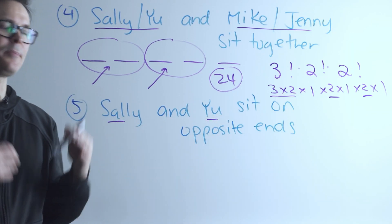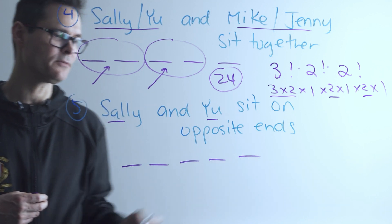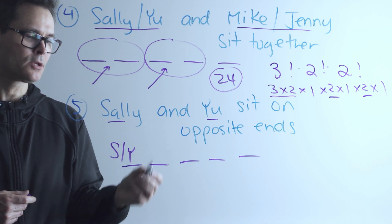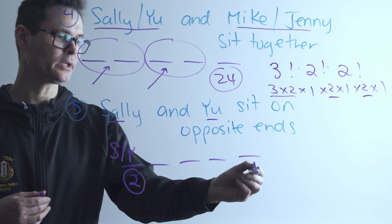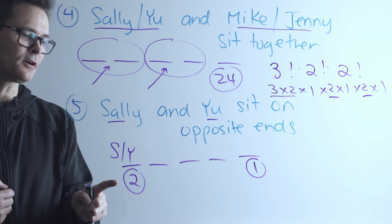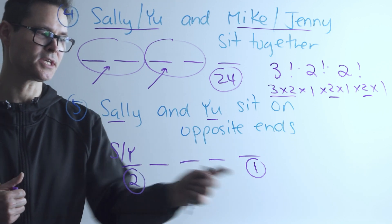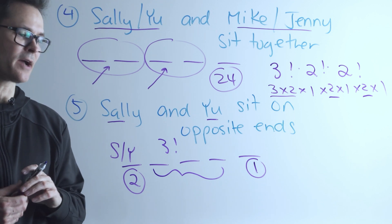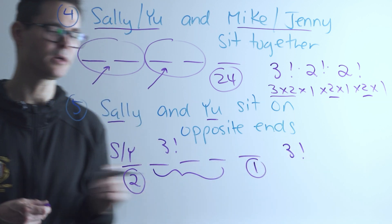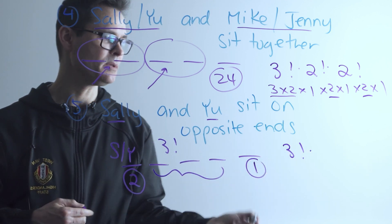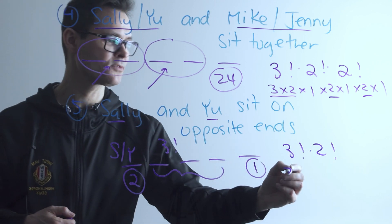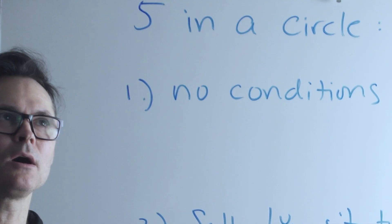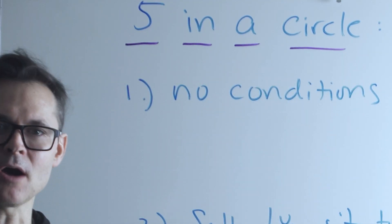Let's look at the case where Sally and you sit on opposite ends. With five seats in a row, either Sally or you occupies the first end — two possibilities. That fixes the other end to the remaining partner, leaving the three remaining people to be arranged in the middle: three factorial. So we have 3! × 2 = 6 × 2 = 12 arrangements.